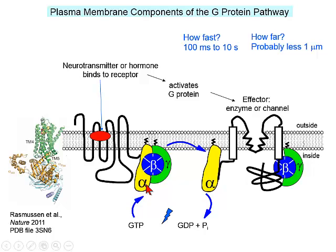Upon activation by the receptor and binding of GTP, the alpha subunit loses its beta-gamma subunit and moves to activate the effector. Typically, the alpha subunit is anchored in the membrane by a lipid tail and diffuses within the plane of the membrane to the effector — less than a micrometer. In other cases, the alpha subunit and the beta-gamma subunit are pre-existing in a complex with the effector.